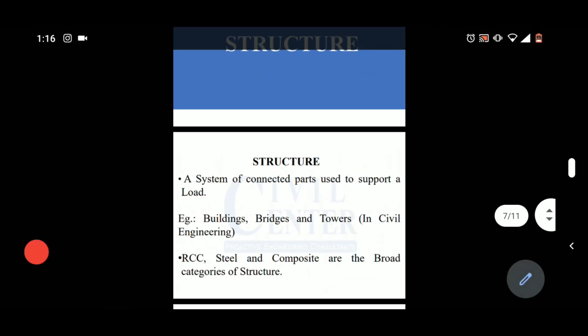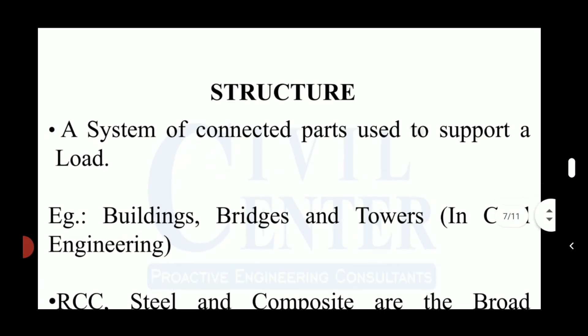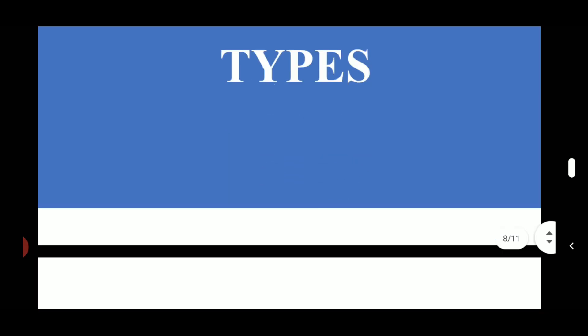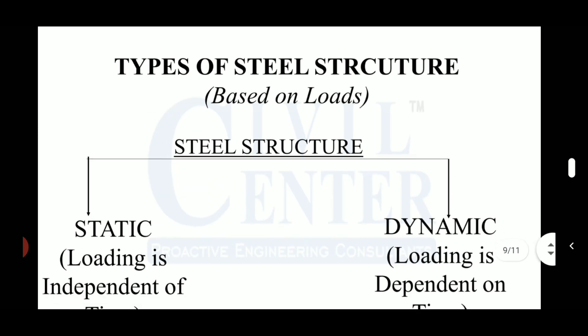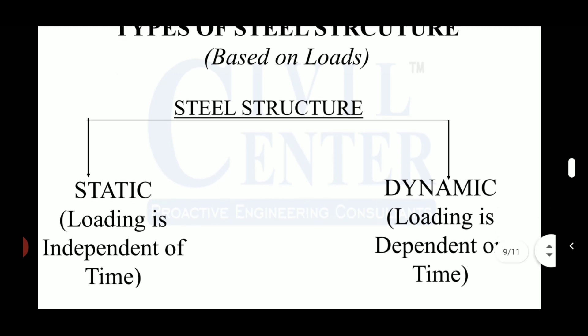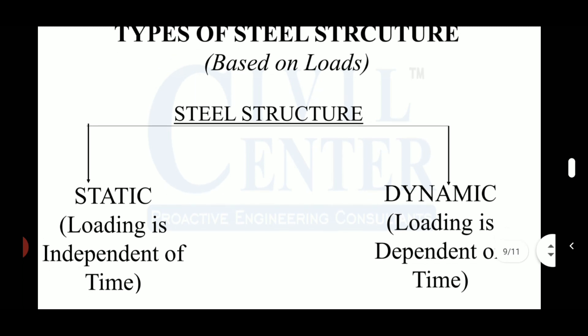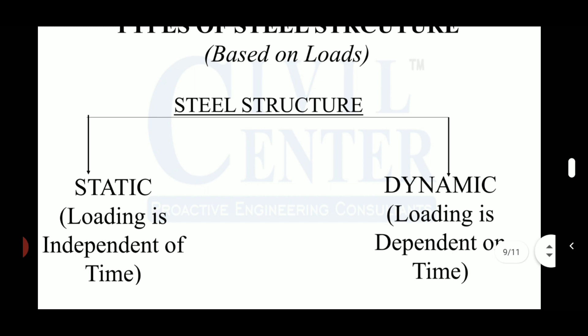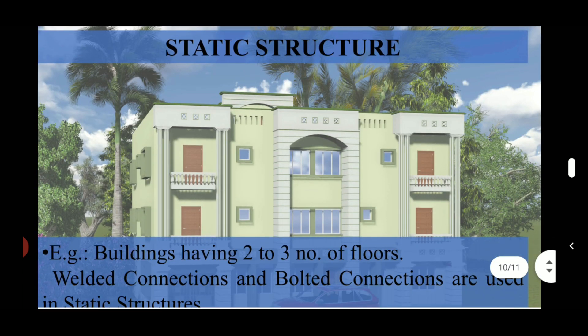Now let us look at the types of steel structures based on load. The types are static and dynamic. Static structures are those in which the loading is independent of time. Let us understand static and dynamic types of structures with the help of an example.